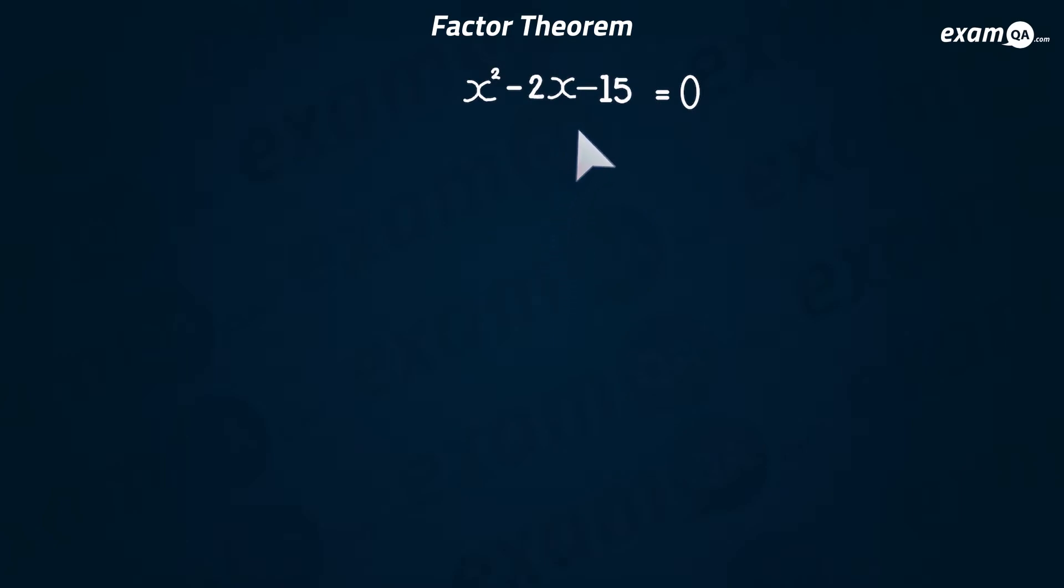So we've got a quadratic here, and it's equal to zero. You should have no problems factorising it and solving it. To factorise, you'll first look at this minus 15. You'll just think of two numbers which multiply together to make the number in the middle, minus 2. And minus 5 and plus 3 sounds good. Then, of course, you factorise it.